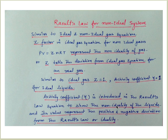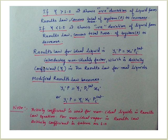The activity coefficient, represented as gamma, is introduced into Raoult's law to show the non-ideality of liquids. Its value represents the positive or negative deviation from Raoult's law. Gamma gives you information about how much a real liquid is deviating from ideality. If gamma is greater than 1, it shows positive deviation of the liquid from Raoult's law, causing the total pressure of the system to increase. If gamma is less than 1, it shows negative deviation, causing total pressure to decrease.